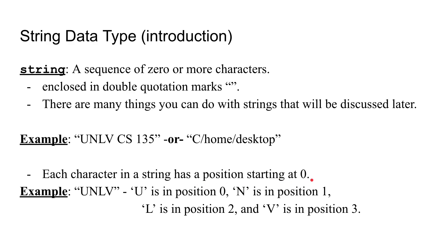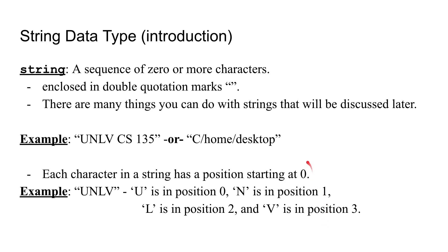One very important thing to note about strings is that each character has a position which starts at zero. For example, in the string UNLV, U is at position zero, N is at position one, L is at position two, and V is at position three. And that is all the simple data types you need to know for now. Thanks for watching, and we will see you in the next video.